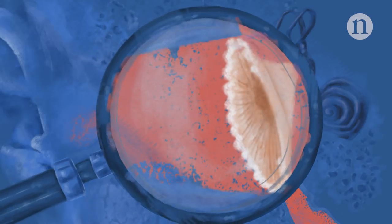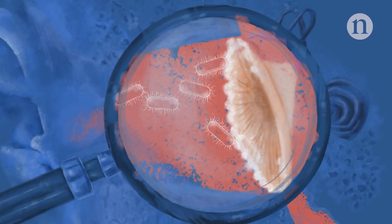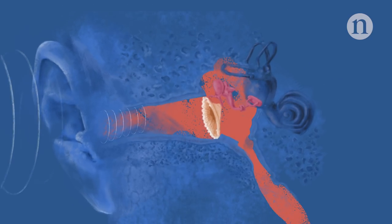That's because the eardrum acts as a barrier, keeping bacteria and other nasties out of the middle ear. Its other main role is carrying sound waves to the bones that enable us to hear.